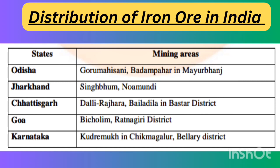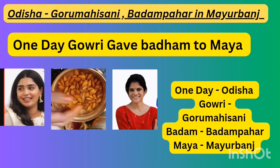The first shortcut is: 'One day Gauri gave Badam to Maya.' 'One day' — O and D stands for Odisha. 'Gauri' — G.O represents Guru Mahisani. 'Badam' represents Badam Bahar. 'Maya' represents Mayurbanj.